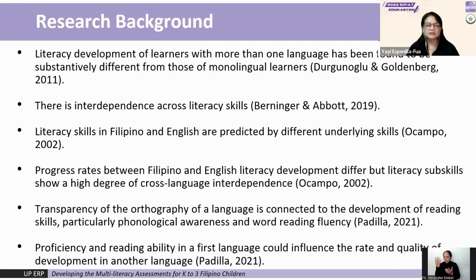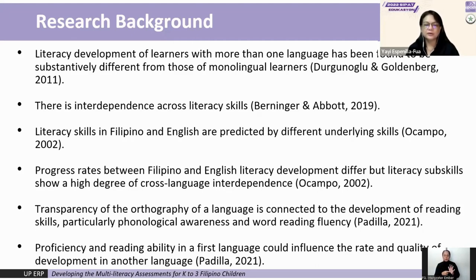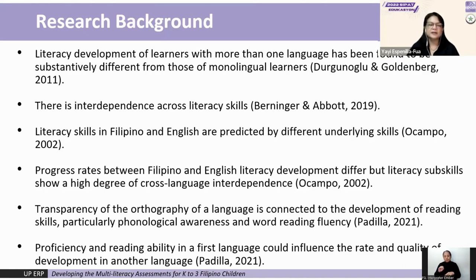Previous studies on literacy learning in multiple languages tell us that literacy development of learners with more than one language is substantively different from monolingual learners. There is interdependence across literacy skills. For our own context, literacy skills in Filipino and English are predicted by different underlying skills. Progress rates between Filipino and English literacy development differ, but literacy subskills show a high degree of cross-language interdependence. More recent studies show that orthographic transparency is connected to the development of reading skills, particularly phonological awareness and word reading fluency, and that proficiency in a first language could influence development in another language.